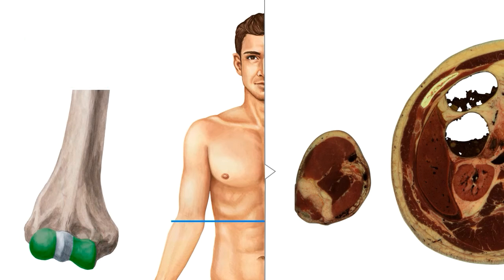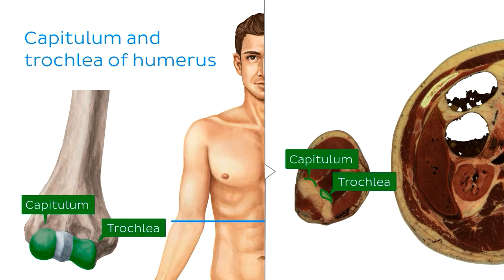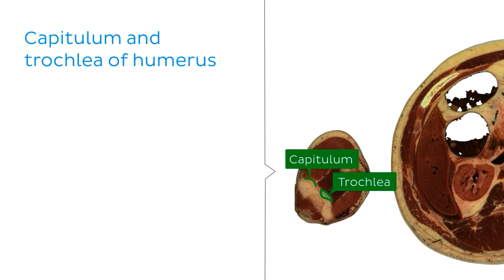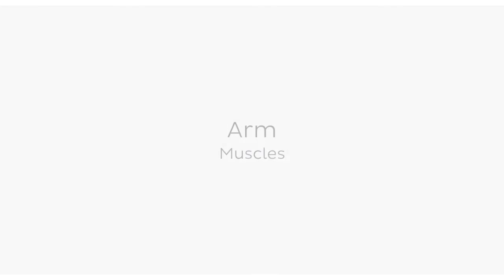And in this cross section, we can also identify the articular surfaces of the capitulum and the trochlea. These articulate with the radius and ulna respectively, forming the humeroradial and humeroulnar joints, which together make up the elbow joint.